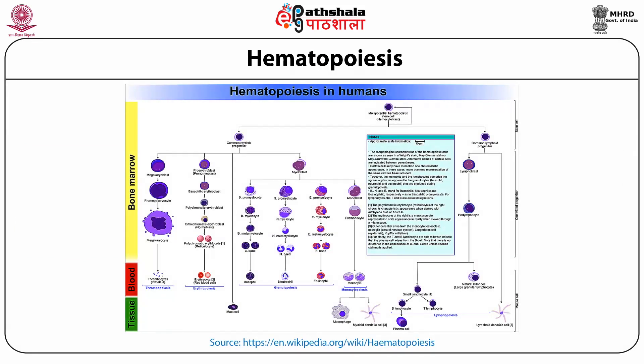Figure 1 explains the process of hematopoiesis. As we can see, the process starts with pluripotent stem cells, which then divide into two lineages: myeloid and lymphoid progenitors — the common myeloid progenitor and the common lymphoid progenitor. The myeloid progenitor gives rise to RBCs, monocytes, and granulocytes.